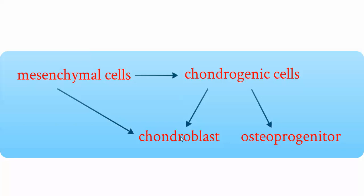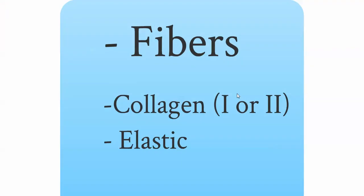To summarize the cell relationships: the mesenchymal cell gives rise to both chondrogenic cells and chondroblasts. The chondrogenic cell can differentiate into chondroblasts and osteoprogenitor cells. Osteoprogenitor cells are the precursor cells of bone tissue, which we will discuss in the next video.